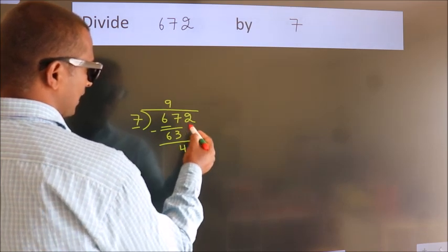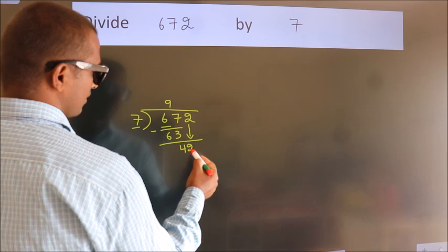After this, bring down the beside number. So 2 down. 42.